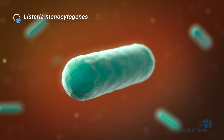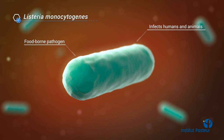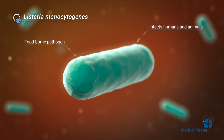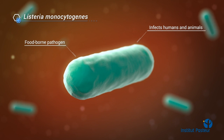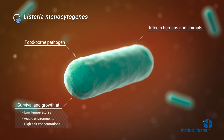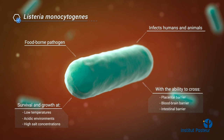Listeria monocytogenes is a well-known food-borne pathogen that can infect both humans and animals. Its characteristics make it a unique model in infection biology. Indeed, it can survive and grow in a wide range of conditions and can cross different host barriers.